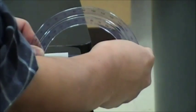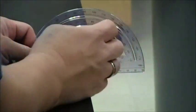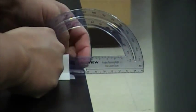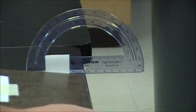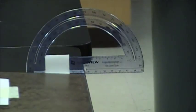Next, set up your protractor so that the middle of the protractor is at the edge of the table. Then tape the edge of your whiteboard to the edge of the table, creating a hinge.